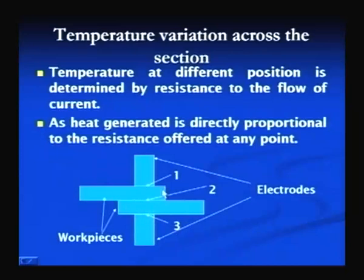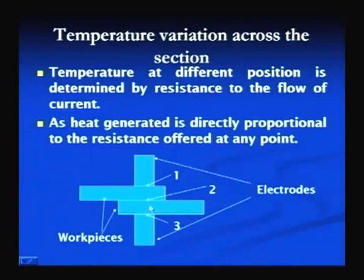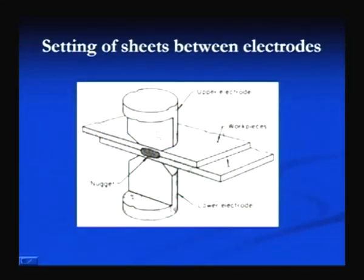Regions 1, 2, and 3 are subjected to higher temperature compared to other areas in the electrode or work piece sections. If we see how the contact resistance varies from one electrode side to the other through the work pieces to be joined, we get the variation in temperature at different zones. When the plates are placed between the electrodes and flow of current takes place, a nugget is formed at the interface between the two plates, and this nugget acts as a joint for joining them.